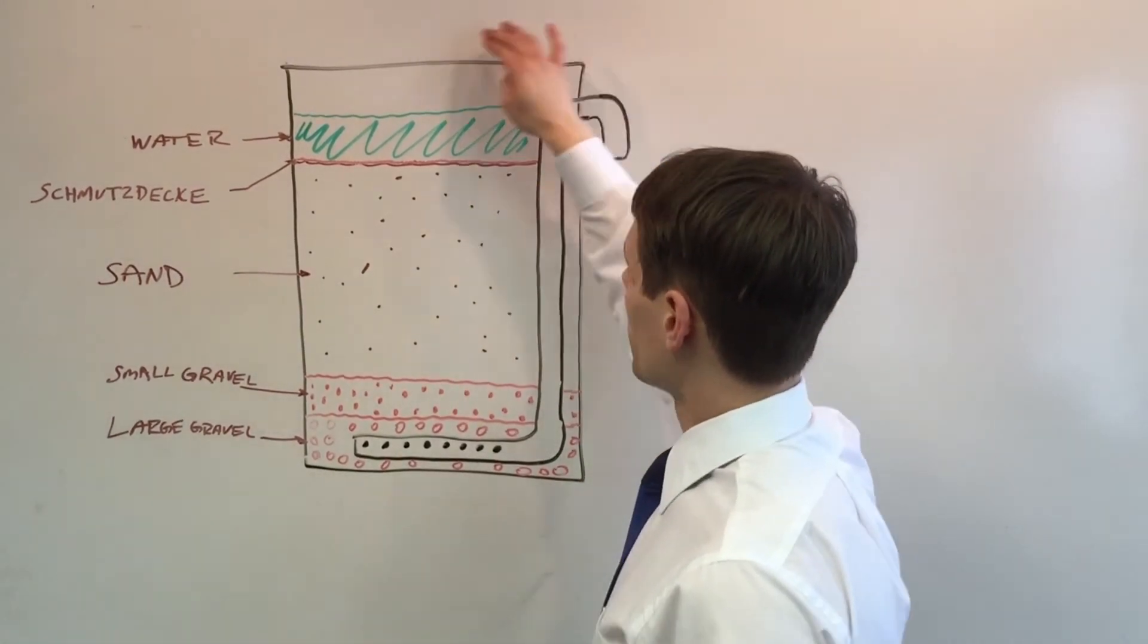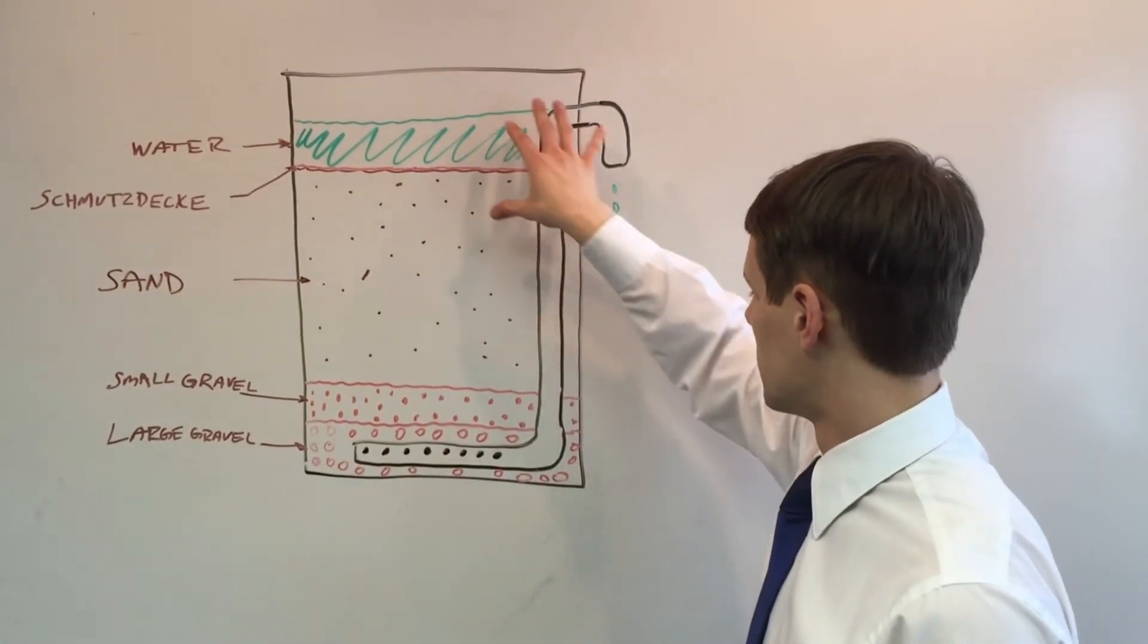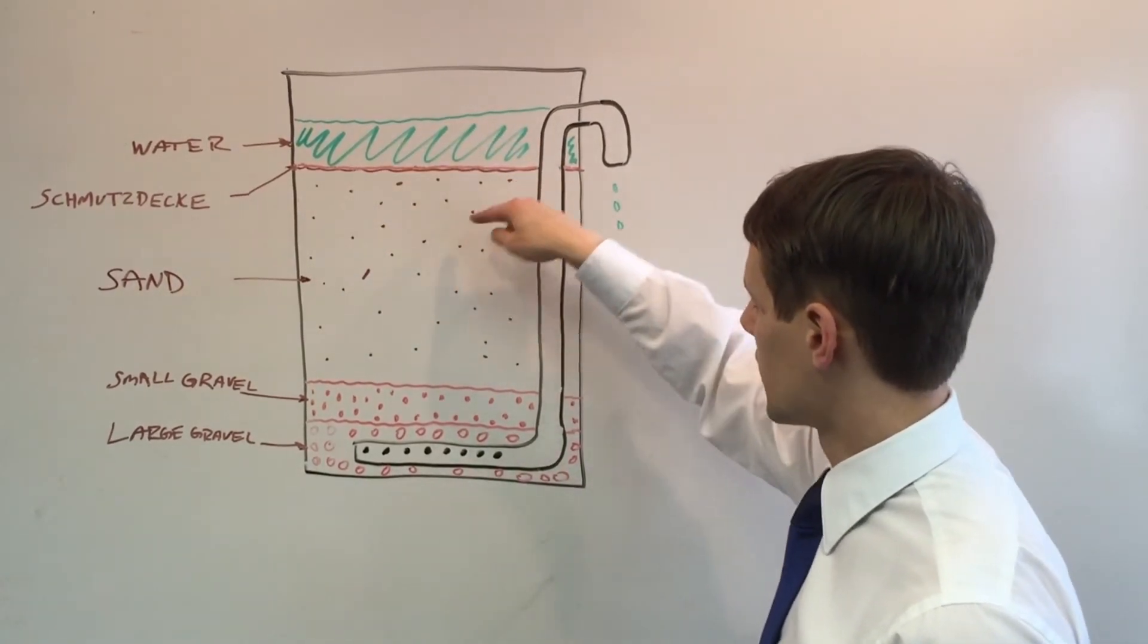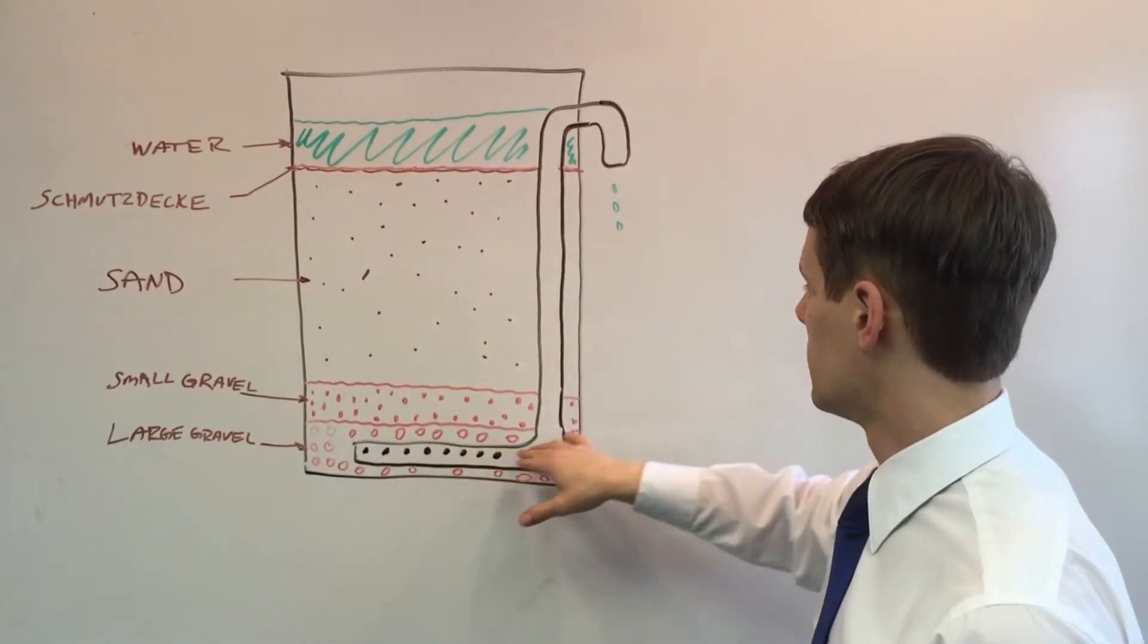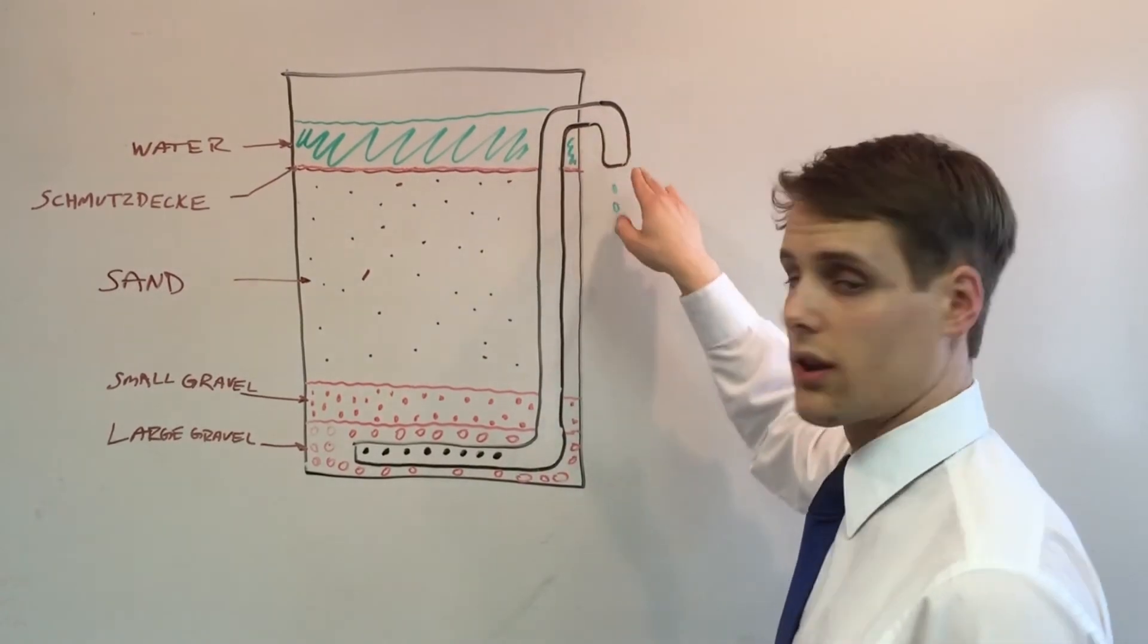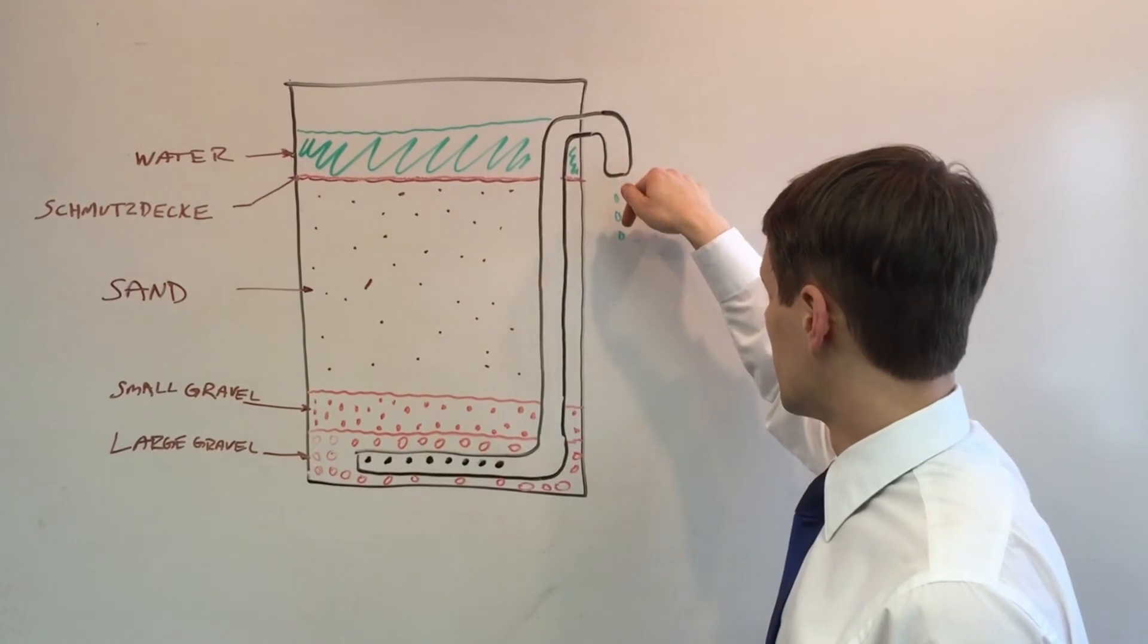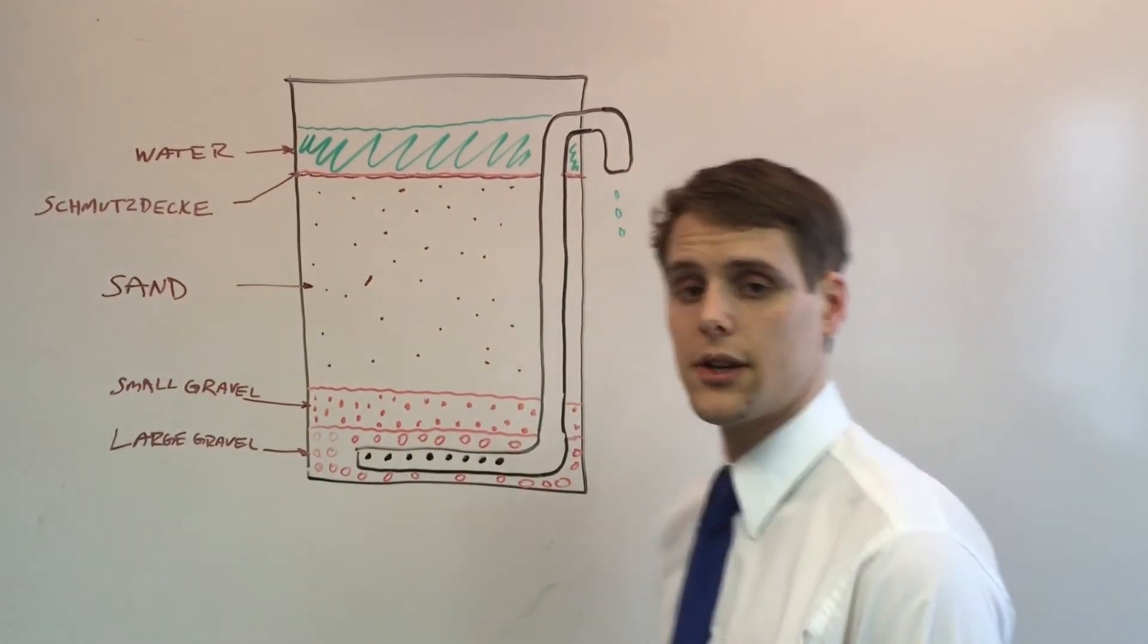And it's as easy as pouring the water in top of the 55-gallon drum. The water filters through the schmutzdecke, the sand, and the gravel and then gets pushed out using a water head out through the end. And that's how you get your clean water.